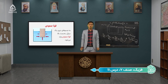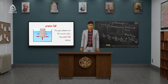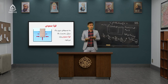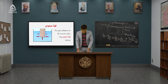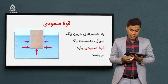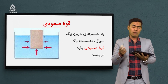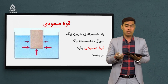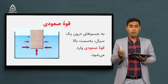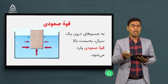قصد داریم قوه صعودی یا قوه شناوری را با هم بررسی کنیم. وقتی شما وارد حوض آبازی میشوید، هرچه به اعماق فرو بروید یک قوه شما را به سمت بالا میکشاند. این قوه همان قوه شناوری یا قوه صعودی است. تعریفش: به جسمهایی که درون یک سیال قرار دارند — سیال هر ماده‌ای است که شکل خود را حفظ نکند مثل مایع یا گاز — به سمت بالا یک قوه اعمال میشود به نام قوه صعودی.